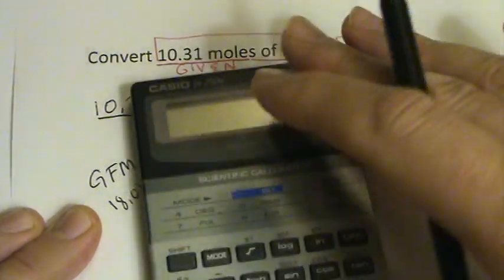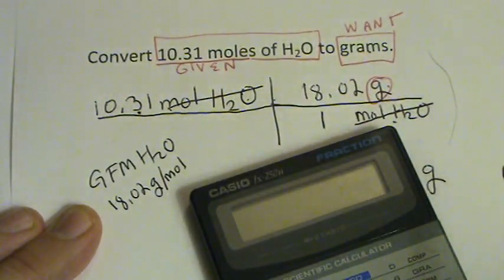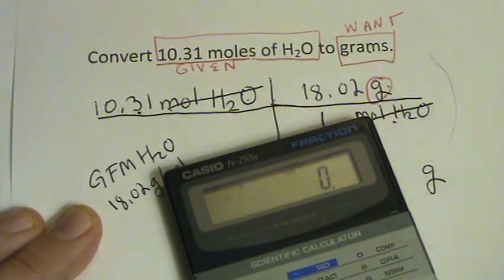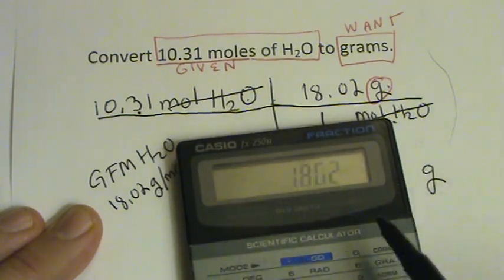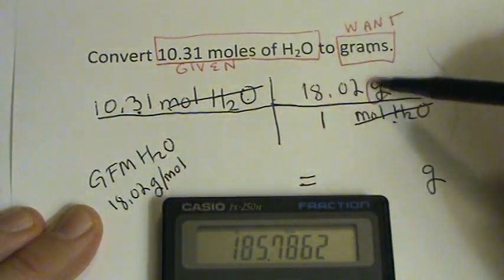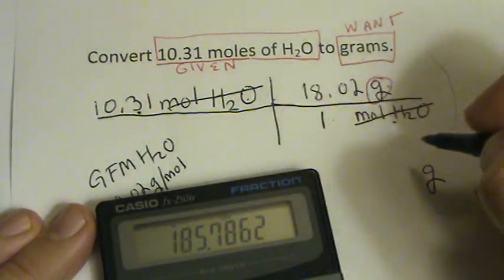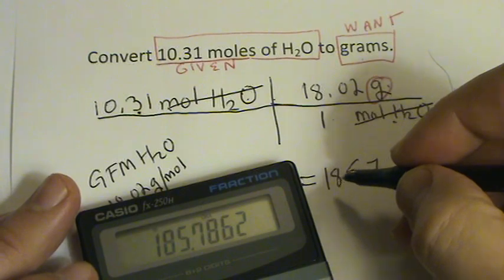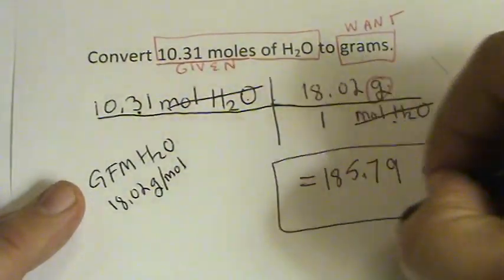So, I'm going to take 10.31 times... Oh, my calculator's not on. There we go. 10.31 times 18.02. And we would divide that by 1, it wouldn't change anything. So we end up with 185.786. But let's round that 8 up to 79.